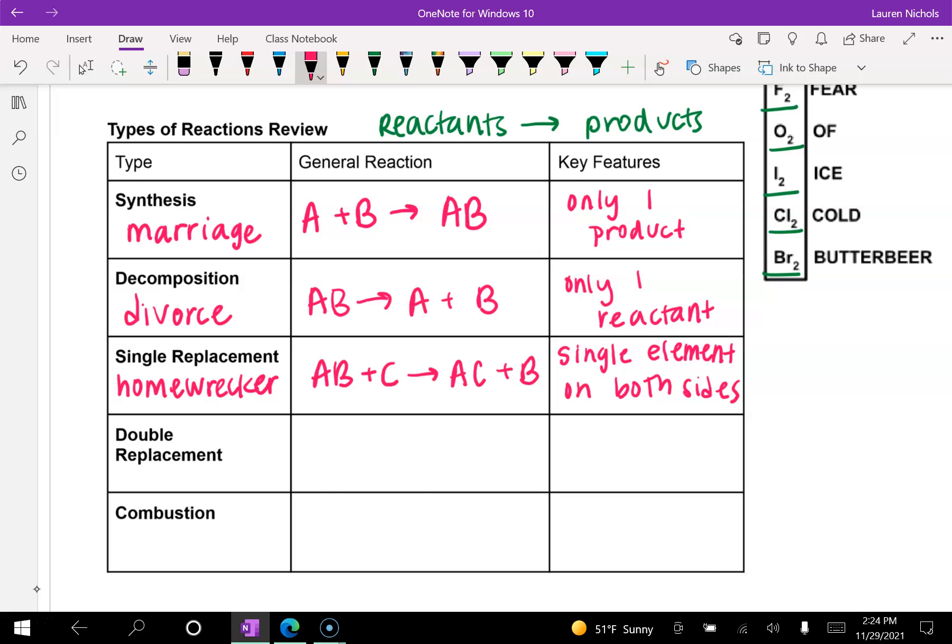In a double replacement reaction, this is the one that was named after the MTV show Wife Swap. This is where you have two compounds or two couples, A and B, and C and D. And what happens is A and C, they trade places. So A and C trade places. And so that means you're going to end up with CB plus AD. Now, a defining feature or a key feature of this is that there are no single elements at all. There are no elements that are single.